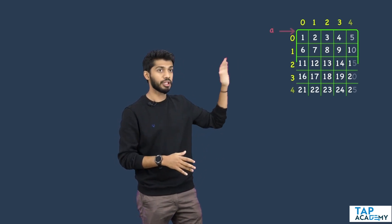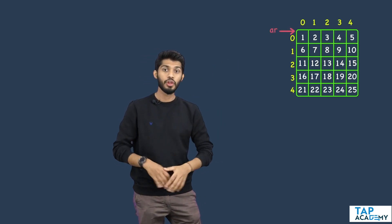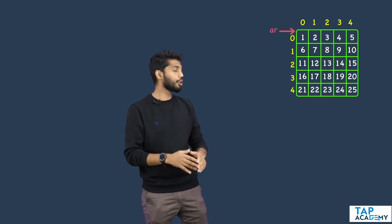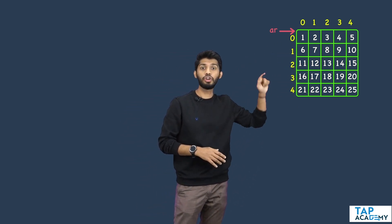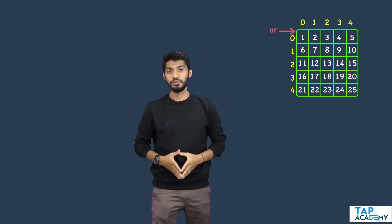Hey guys, welcome back to another session on data structures and algorithms. In this particular session we will solve another problem based on matrix. You will be given an n cross n matrix, and all that you need to do is print all the border elements in the clockwise direction.